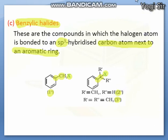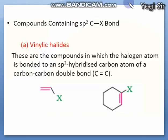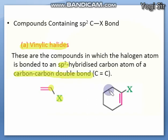The next classification is compounds containing an sp2 carbon–halogen bond. There are two subtypes. In the first, vinylic halides, the halogen atom is directly bonded to an sp2 hybrid carbon — that is, the halogen is bonded to one of the carbons of a carbon–carbon double bond. This can also occur in cyclic rings where there is a double bond and the halogen is attached to that same carbon.